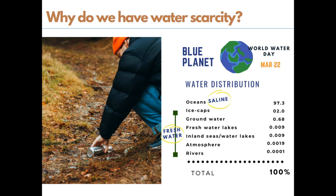We know our Earth is a blue planet and three-fourths of Earth is surrounded by water, but why do we still have water scarcity? This chart shows the distribution of water around Earth in percentage. Saline water makes up 97 percent, and only the remaining 3 percent is fresh water — and of that, some is in ground level and a portion is in ice caps. We cannot consume saline water.